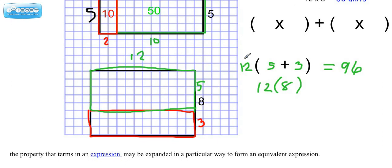Now, another way to think of this is 12 times 5. That's right here. That's this green piece, which would be 60. And then 12 times 3, which would be 36. 60 plus 36 equals 96. Distributive property in action.